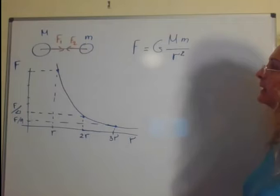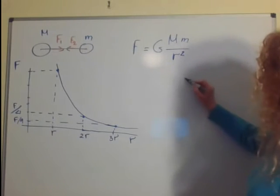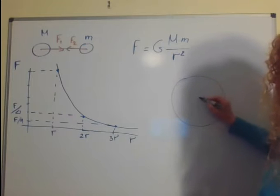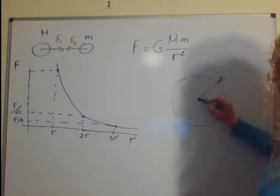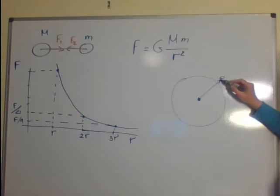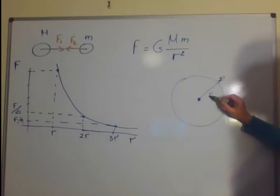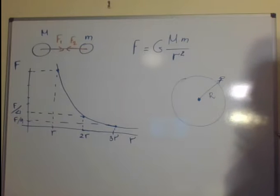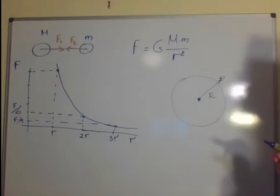Now we always measure the distance from the center of the masses. That means that if we are on a planet, the force due to gravity is measured between the center of the planet and the center of our mass. That means that actually the radius of the planet is the distance between the planet and us.